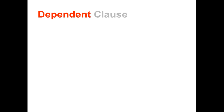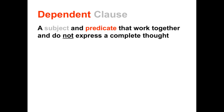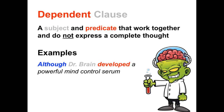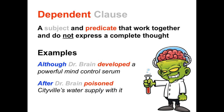Dependent clauses are a subject and a predicate working together but not expressing a complete thought. Here are some examples. 'Although Dr. Brain developed a powerful mind control serum.' This sentence is strikingly similar to the previous one, but it doesn't express a complete thought. The word 'although' is turning this clause into a dependent clause — it would need to be attached to an independent clause to form a complete sentence. Another example: 'After Dr. Brain poisons Cityville's water supply with it.' This clause does not express a complete thought because it has the conjunction 'after' attached to it. It is a dependent clause.